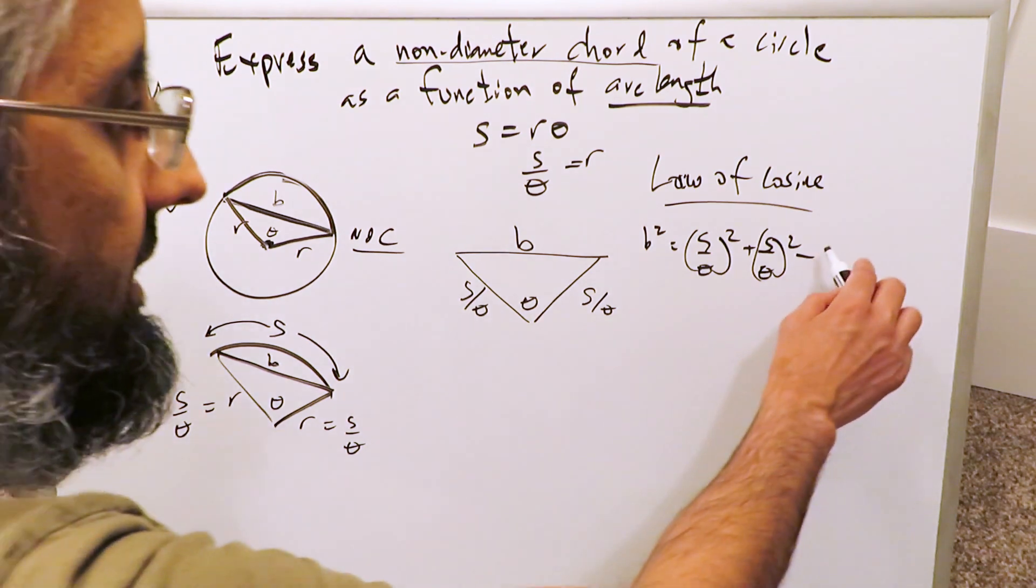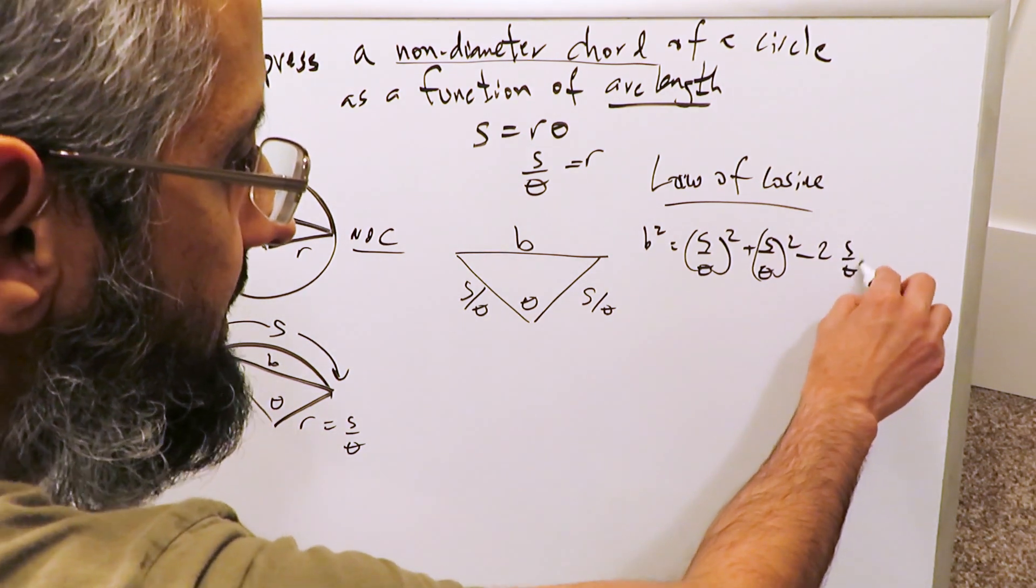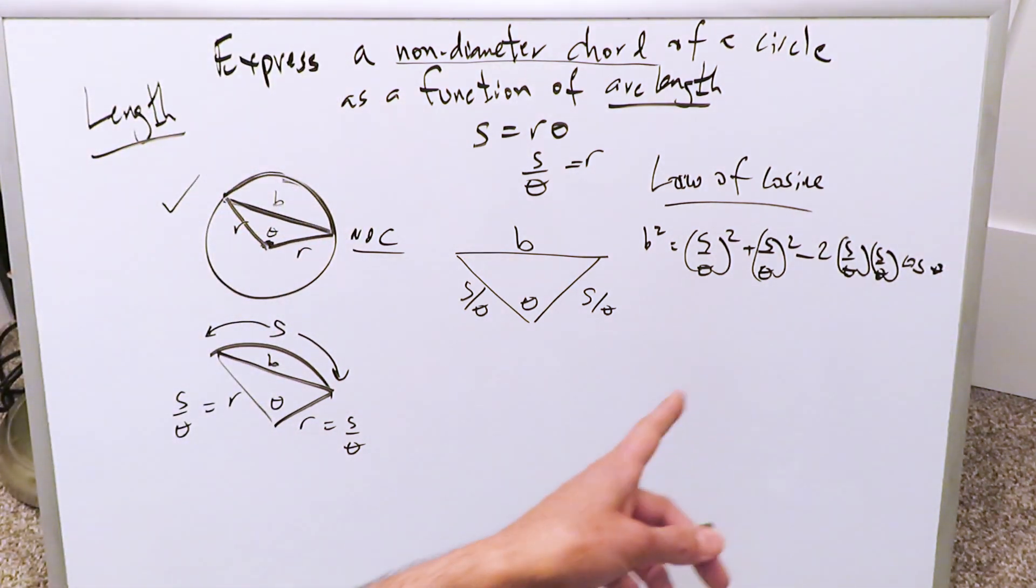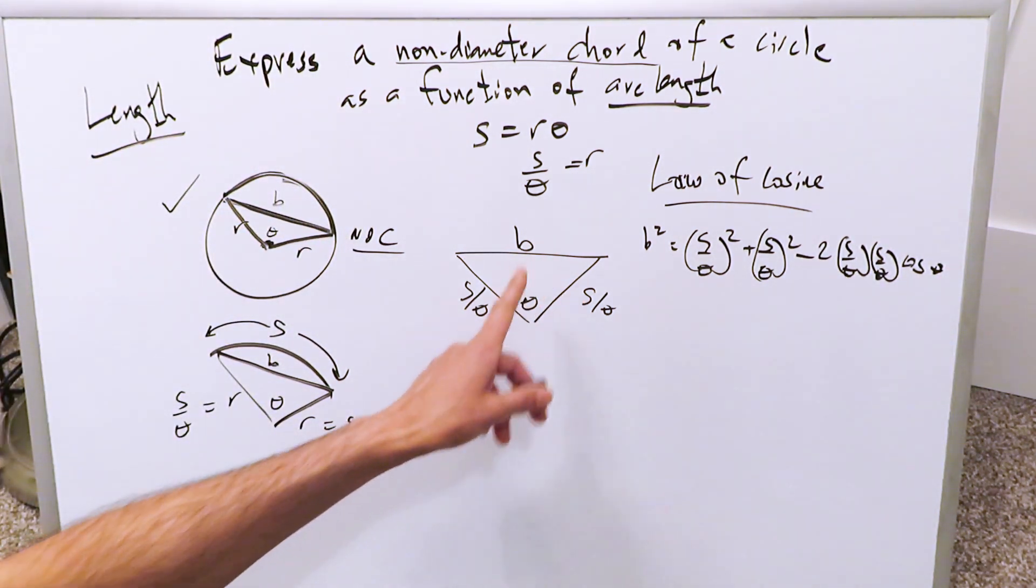And then I have 2 over here, then I have S over theta, S over theta, and then cosine theta. That law of cosine by means of everything you see over here, and this substitution that you see over here is going to help you express the length of this non-diameter chord as a function of arc length.